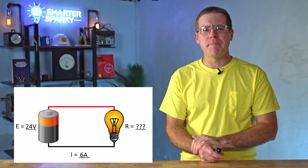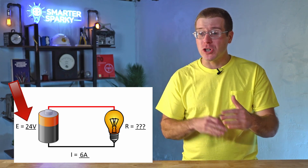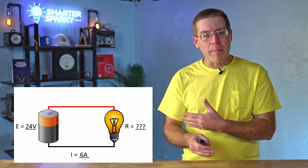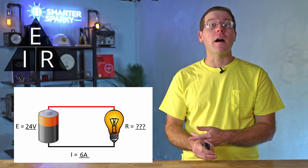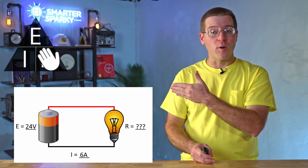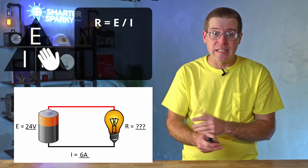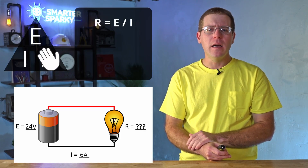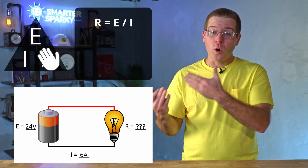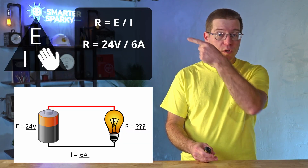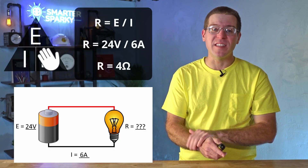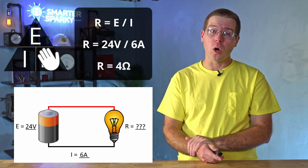What about this circuit? Now we know the voltage and current, but we don't know the resistance. Grab the triangle and cover up R — that leaves E over I, meaning R equals E divided by I. Simply plug the values from the diagram into the formula: R equals 24 volts divided by 6 amps, and we get a resistance of 4 ohms.